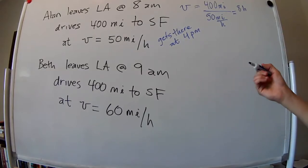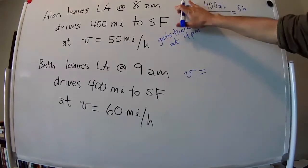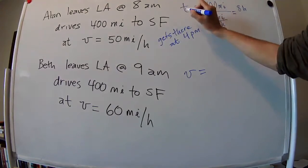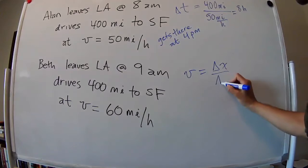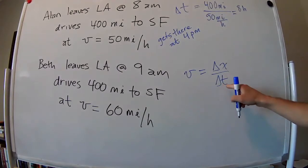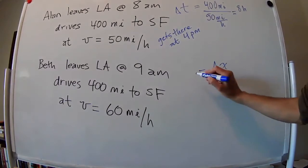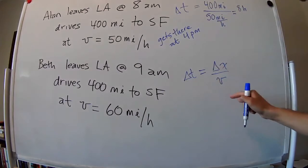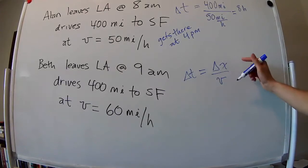For Beth, we do the same thing, right? So the velocity... Oh sorry, this is going to be time. The velocity is delta x over delta time. We know the velocity, we want to get the time. So we can move the velocity over here and the time over here, which is what I did over here, but I guess I didn't explain it well.